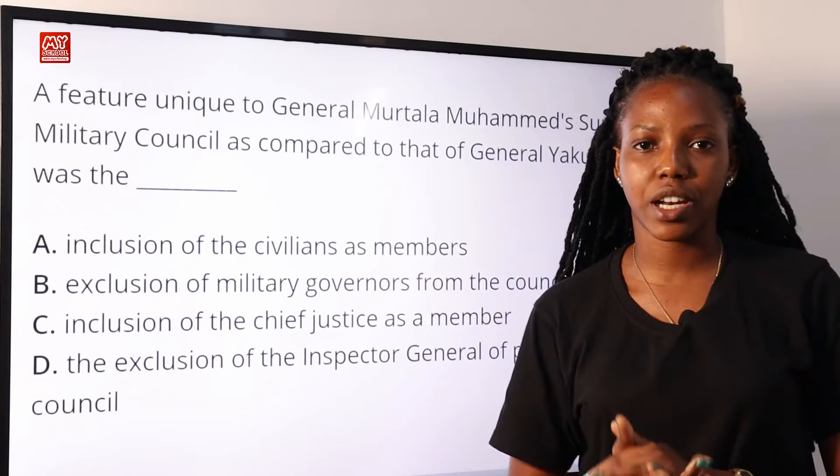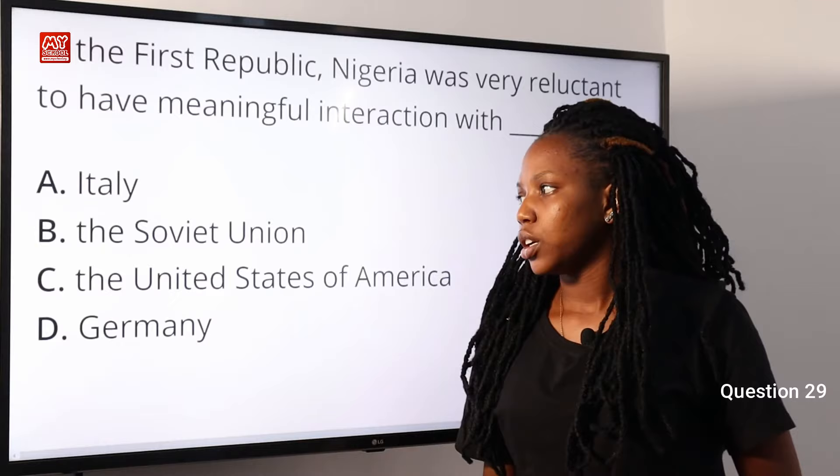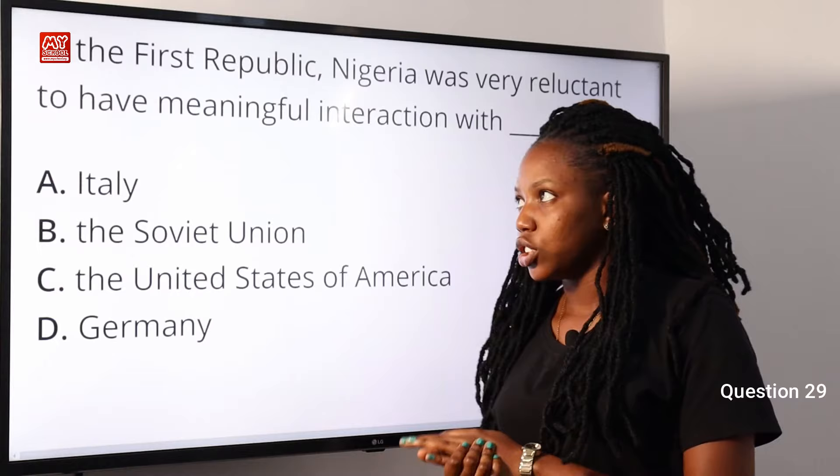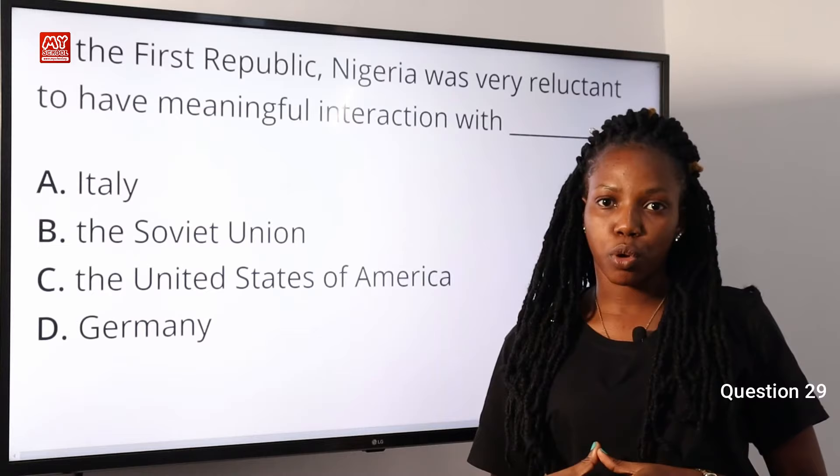Question 29. In the First Republic, Nigeria was very reluctant to have meaningful interaction with dash. A, Italy. B, the Soviet Union. C, the United States of America. D, Germany. First of all, the First Republic started in 1963 to 1966. After that, we had the Civil War, and the country was in chaos.